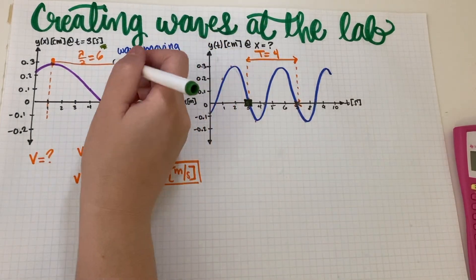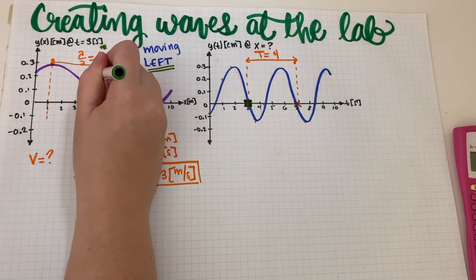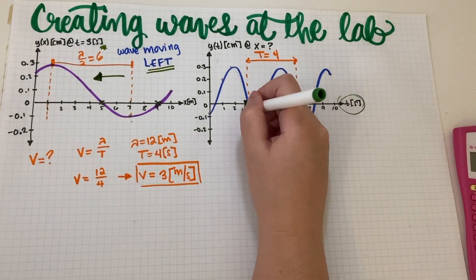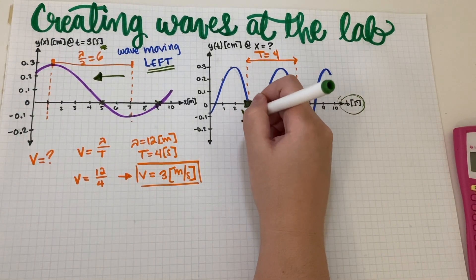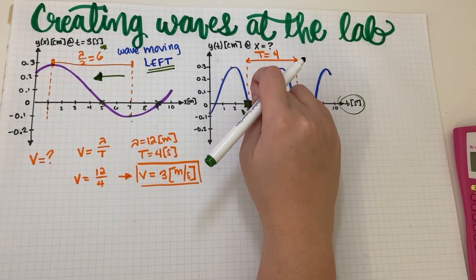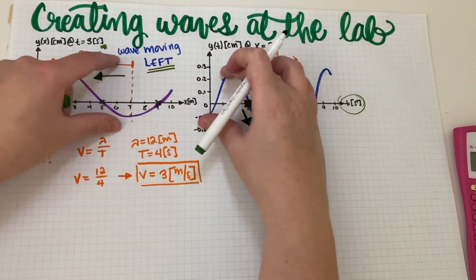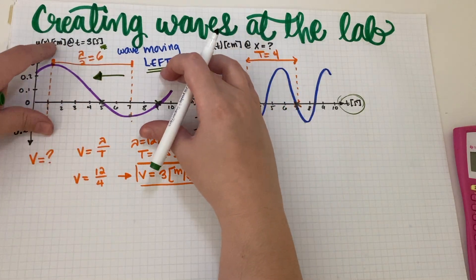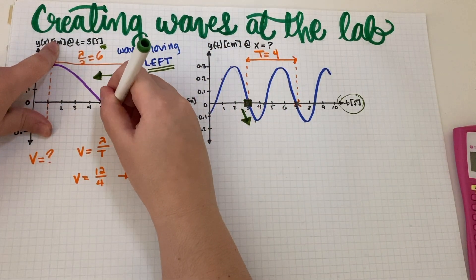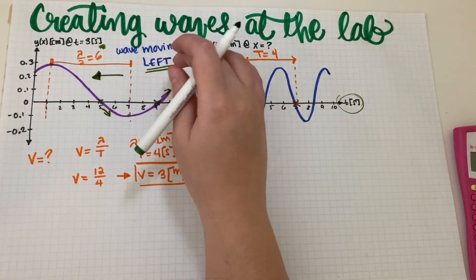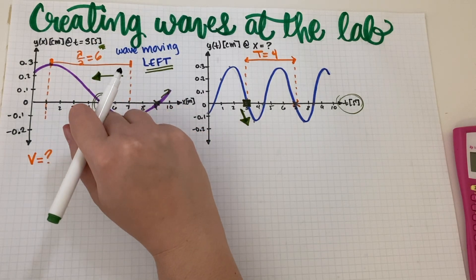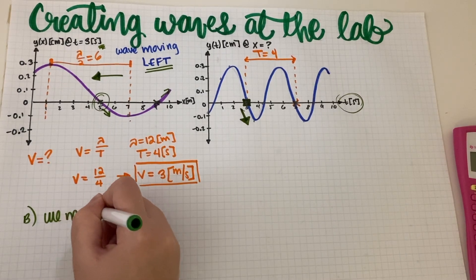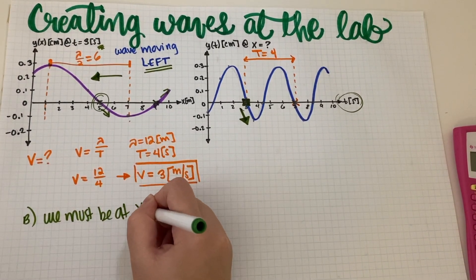To determine which one, we use the fact that the wave is moving left. As time goes by in the displacement vs. time graph, y goes toward the negative side — it goes down. If we shift the spatial graph to the left, the point at x equals 5 would go down, which matches the behavior shown. So the answer is x equals 5.